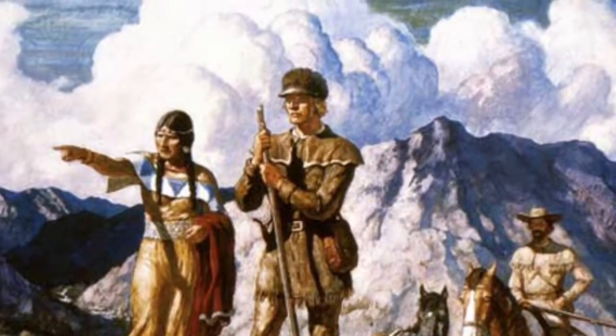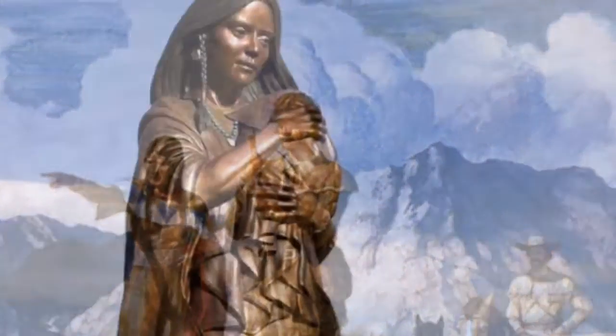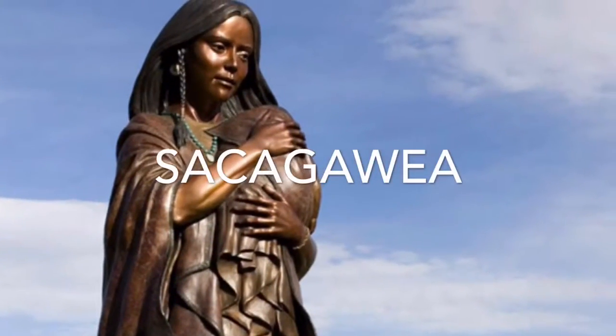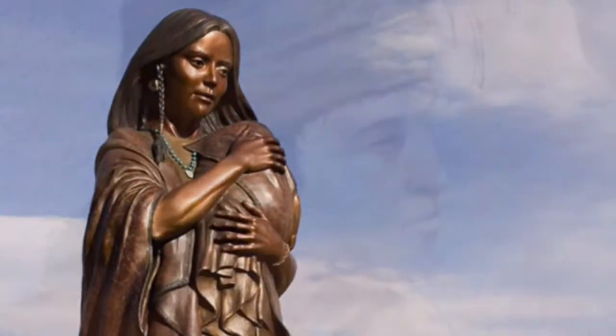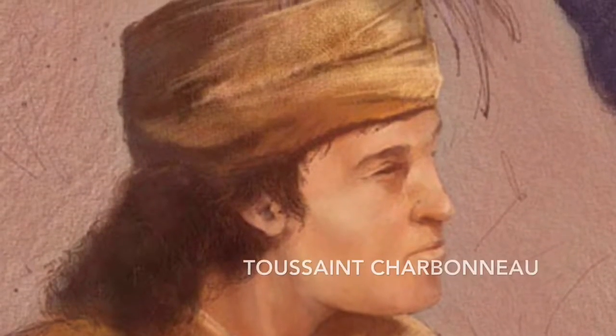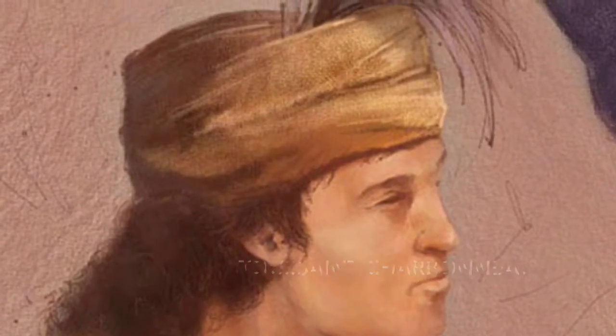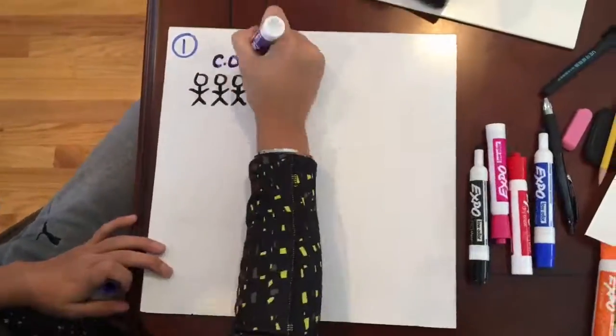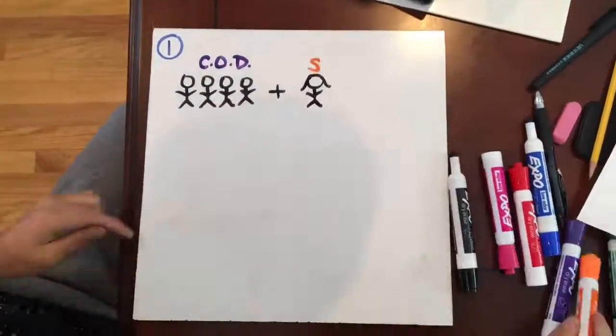In the Hidatsa tribe were French fur trader Toussaint Charbonneau and his Shoshone wife, Sacagawea. Because they both knew many Native American languages, Lewis and Clark hired them as translators. Sacagawea helped them in many ways.